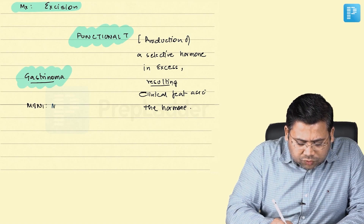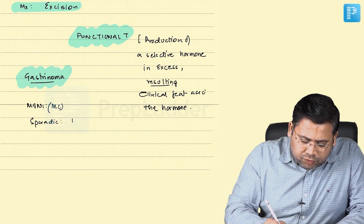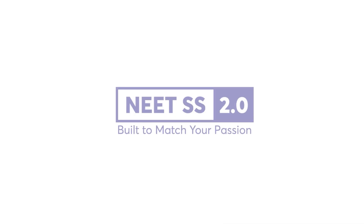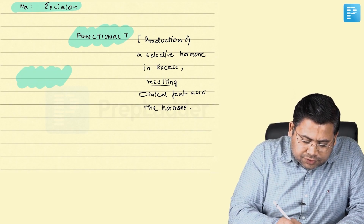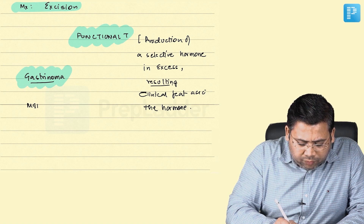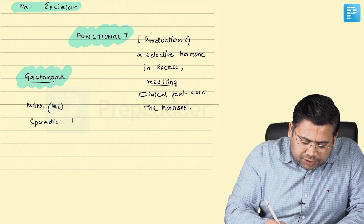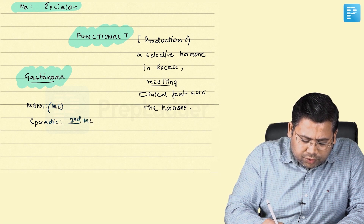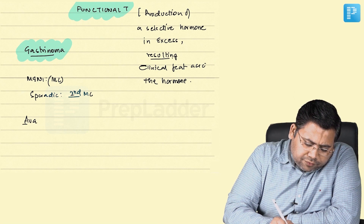In MEN1, gastrinoma is the most common tumor. In sporadic cases, it is the insulinoma which is the most common, making gastrinoma the second most common in sporadic cases. Gastrinoma is the most common tumor in MEN1, and we will discuss it first.